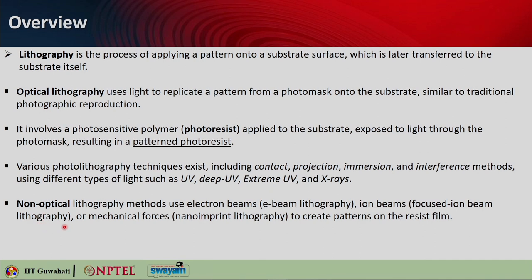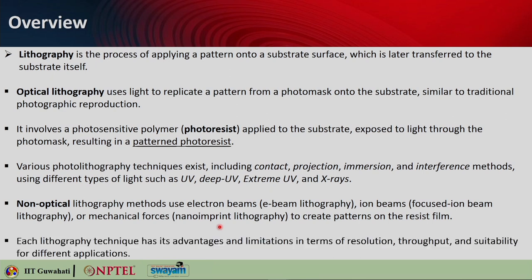Besides optical lithography, there are also non-optical lithography methods that use electron beams — called electron beam lithography — or ion beams, called focused ion beam lithography. There are also methods where mechanical forces are applied to create patterns on the resist film, called nano imprint lithography. Each lithography technique has its advantage and disadvantage in terms of resolution, throughput, and suitability for different applications, which is why all these methods are practiced depending on need and application demand.